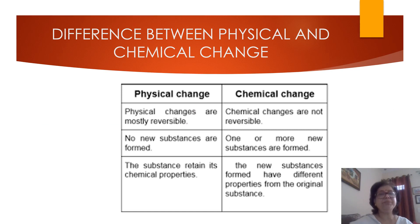Now we can understand the difference between physical and chemical change. Physical changes are reversible; chemical changes are not reversible. In a physical change, no new substances are formed; in a chemical change, new substances are formed. In a physical change, the substance retains its chemical properties; in a chemical change, the new substances formed have different properties from the original substance.